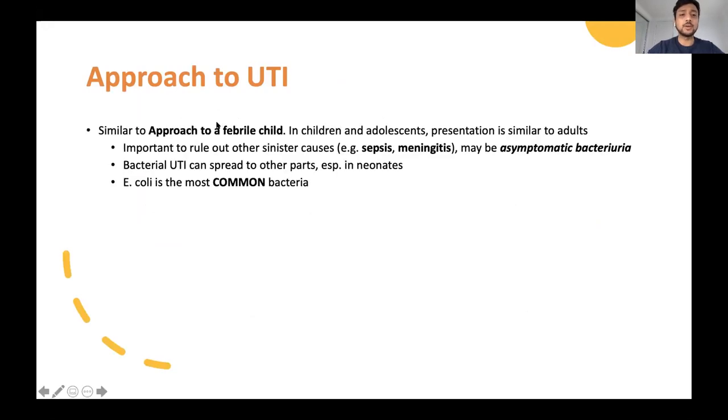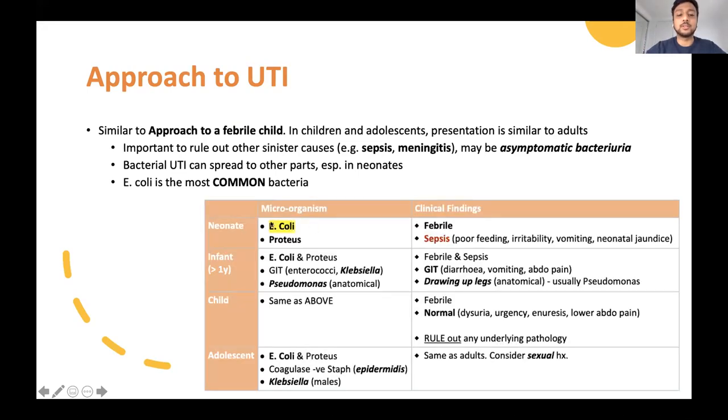Let's go through UTI first. This is very similar to your approach to a febrile child, which will be covered later today. E. coli is the most common bacteria. It's different for neonates, infants, and children. E. coli in neonates, that's pretty much sepsis, urosepsis. In infants, there's a few more bugs. You get the same symptoms. They can also draw up their legs. In children, it's pretty much the same bugs. You get more symptoms such as dysuria and pain, which they can portray and reflect to you. In adolescence, it's the same as adults, just consider a sexual history as well.